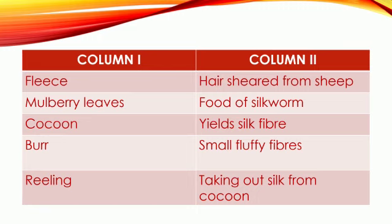The correct answers for the match the following are: fleece — hairs sheared from sheep; mulberry leaves — food of silkworm; cocoon — silk fiber; burr — small fluffy fibers; reeling — taking out silk from cocoon. Thank you.